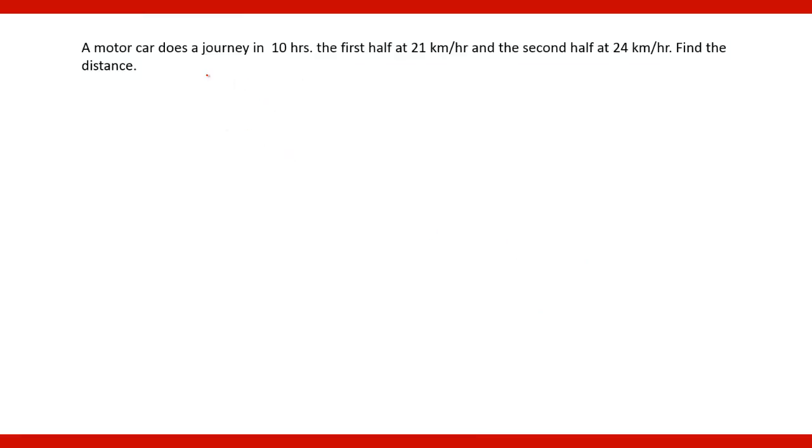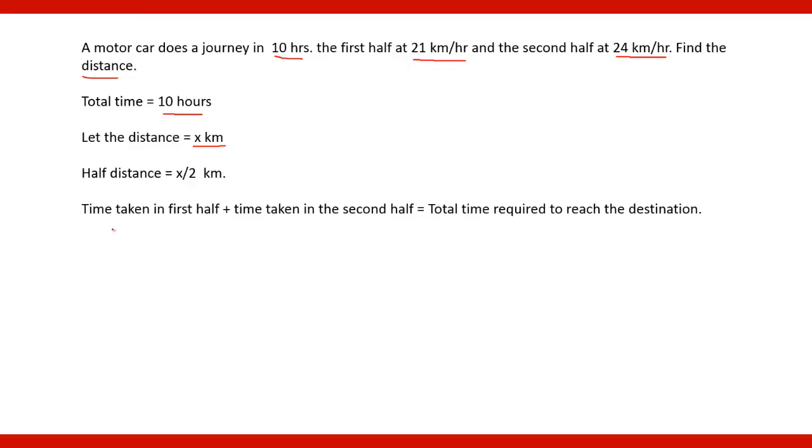Here is another question. A motor car does a journey of 10 hours, the first half at 21 km per hour and the second half at 24 km per hour, find the distance. Let the distance be x km and half of the distance will be x by 2 km. Therefore the time taken in first half plus time taken in the second half will equal total time required to reach the destination.